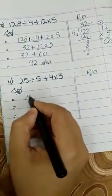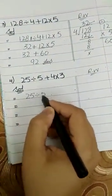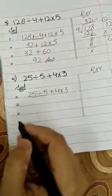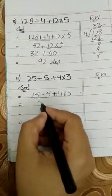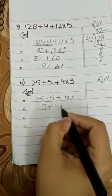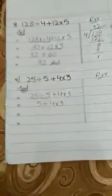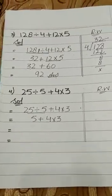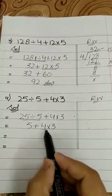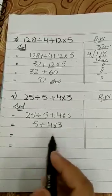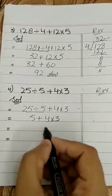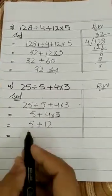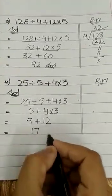We have another question: 25 ÷ 5 + 4 × 3. According to DMAS, we have two signs here — plus and multiply. First we divide: 25 ÷ 5 = 5. Then we multiply: 4 × 3 = 12. Now add: 5 + 12 = 17. And this is your answer.